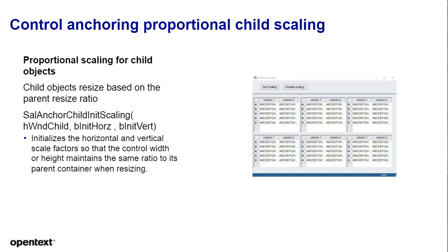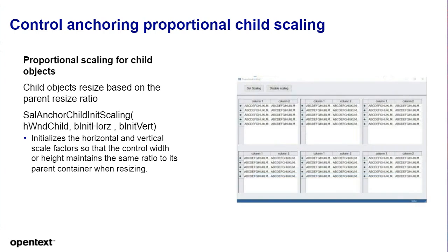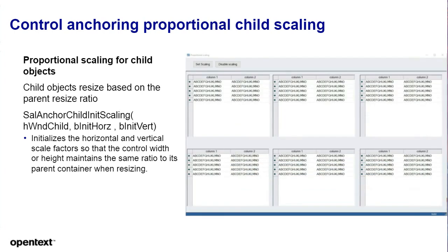There is also something very special added in 7.4: proportional child scaling, a third option alongside control anchoring. This will resize children based on the parent resize ratio, using the API call sal anchor child init scaling. With this enabled, the entire window contents are scaled proportionally — a really nice feature that helps adopt your UI design to very large screen resolutions that are common today.